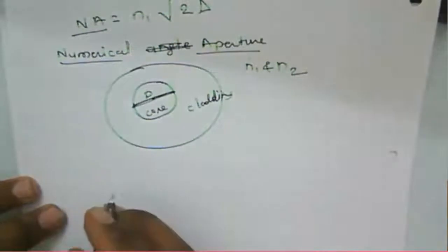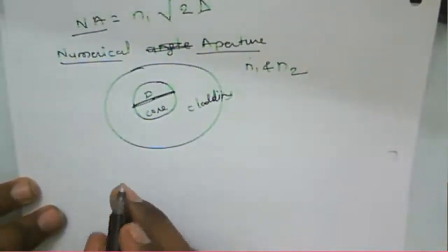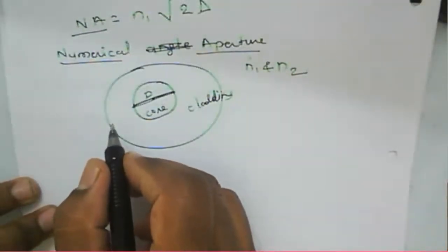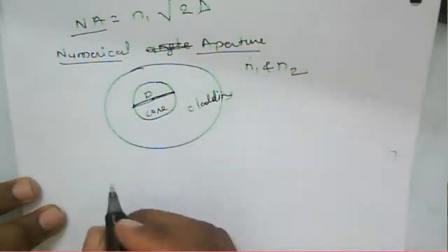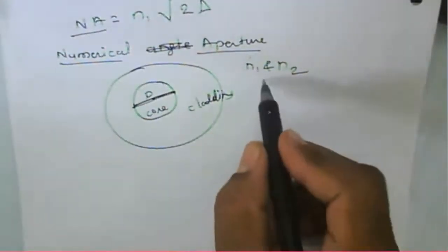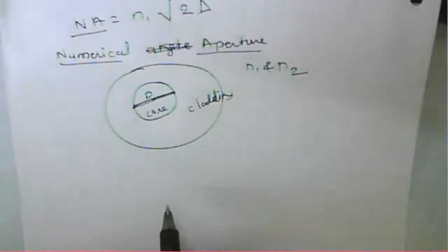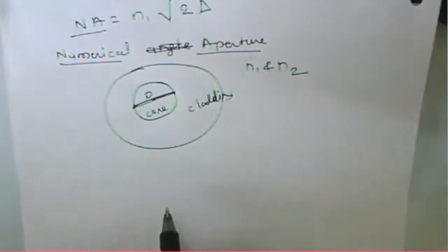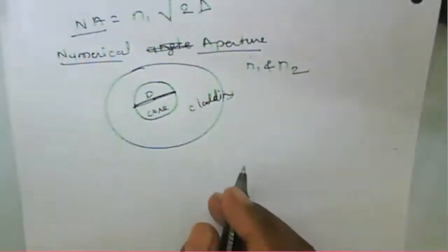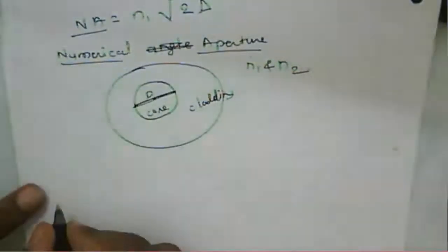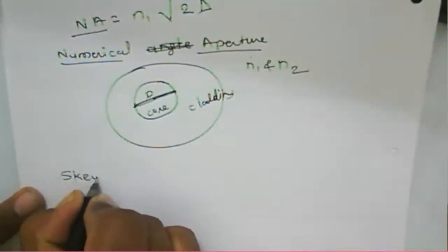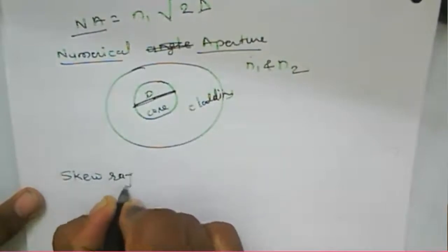Now we can consider numerical values of the numerical aperture for a given particular fiber, based on whatever refractive indices we have for the core and cladding. There are a few numericals based on this numerical aperture — those files will be shared later. We will now proceed with the remaining theoretical portion, which is about skew rays.